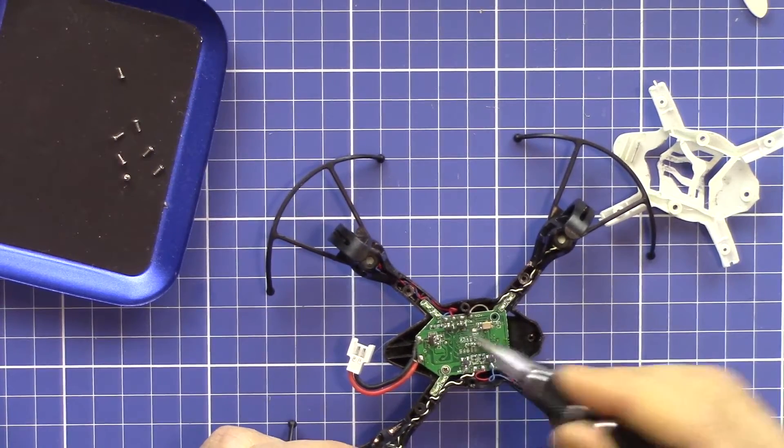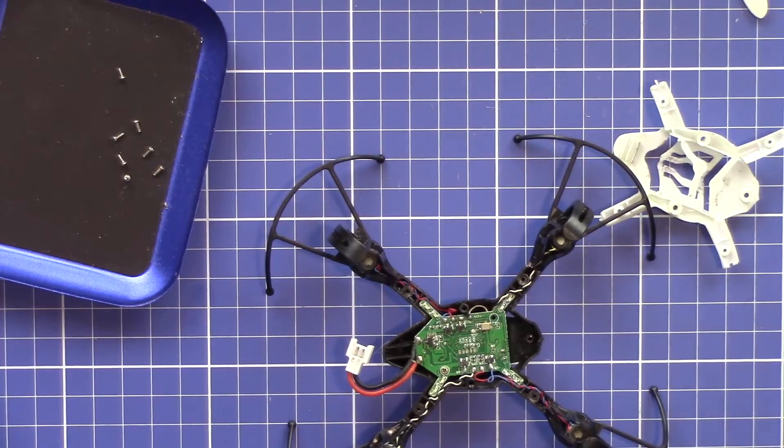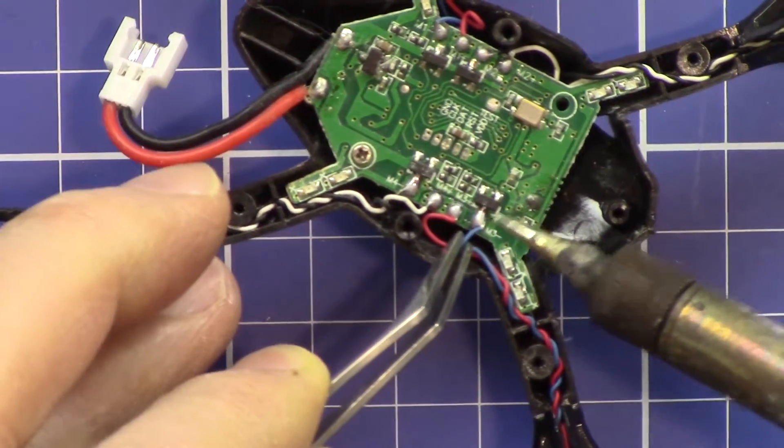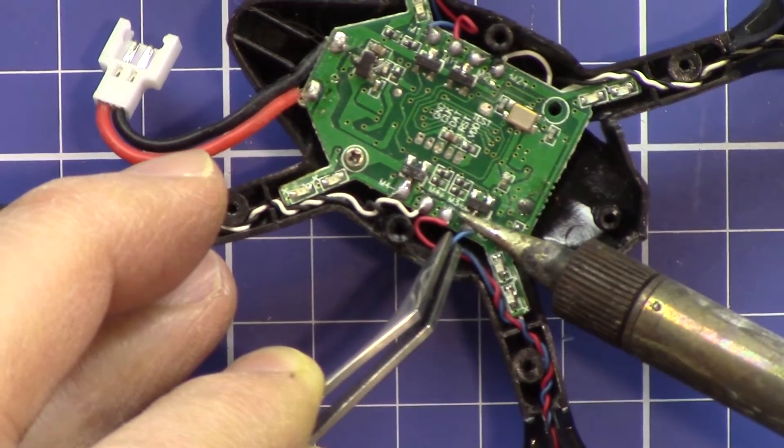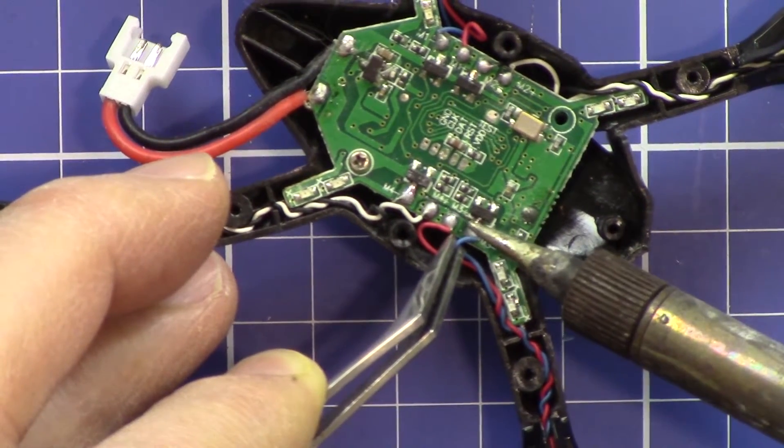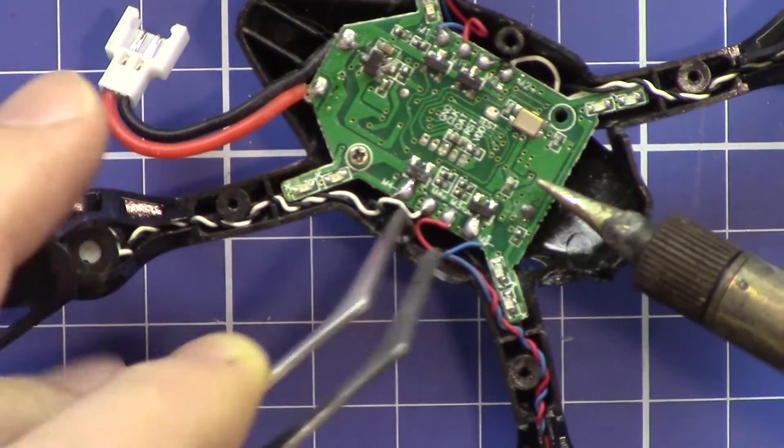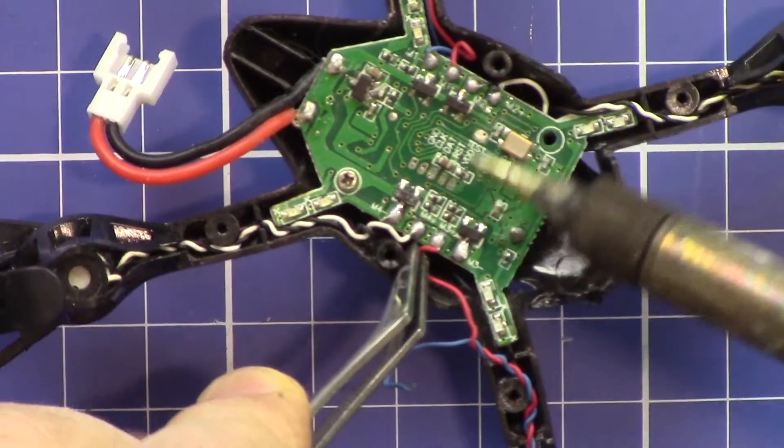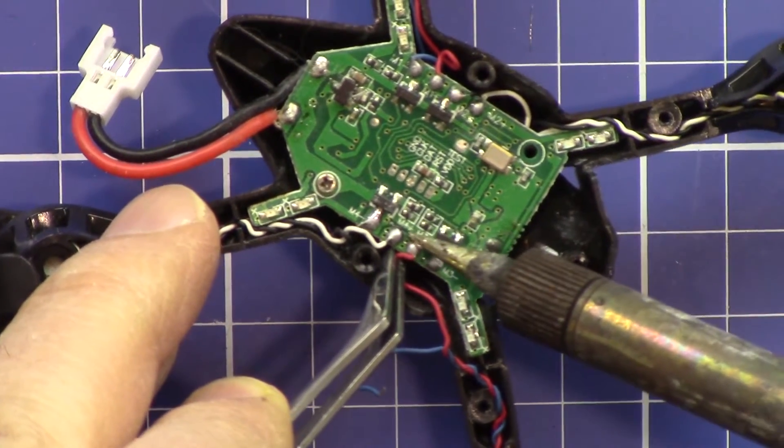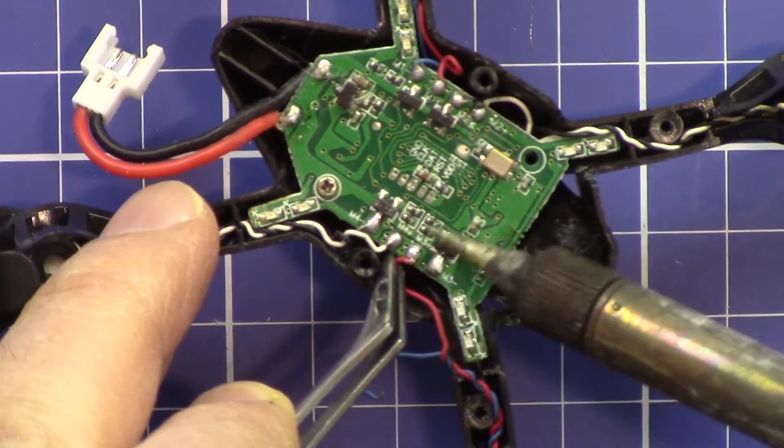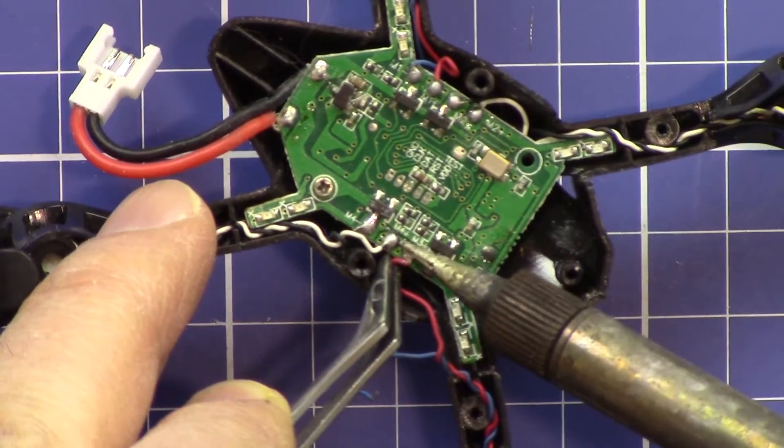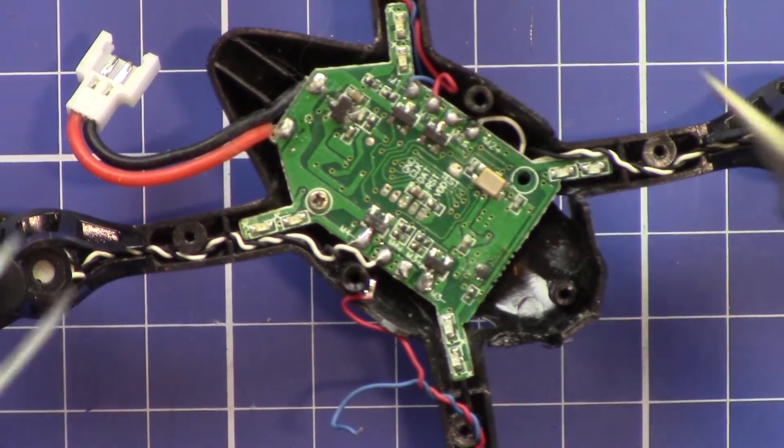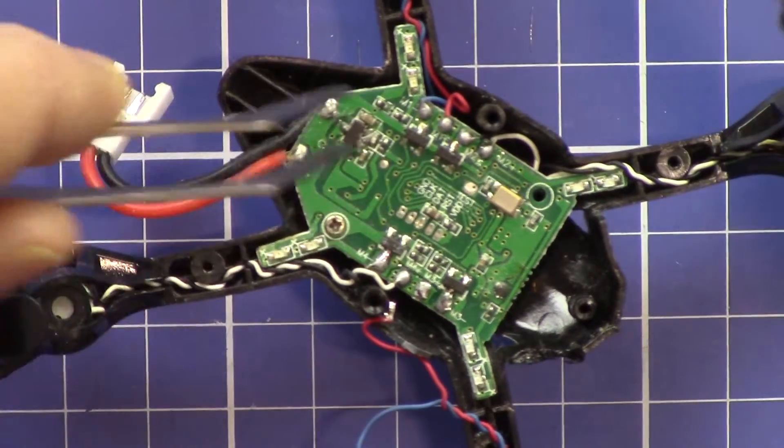So we have to make sure that we set that in the same way. Just connect the wires first. Blue is on the right side as you can see. So this was soldered not properly. So this is done, let's do the other side as well.